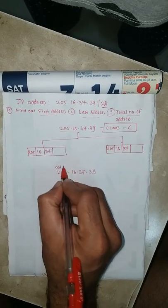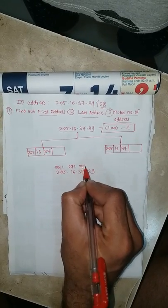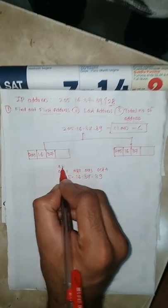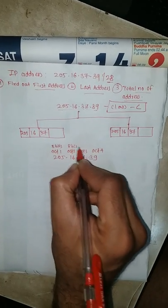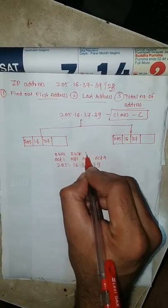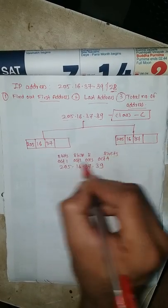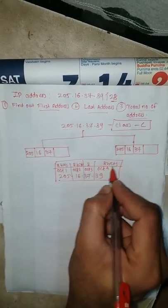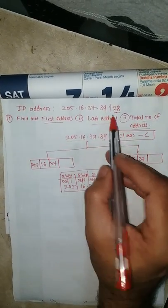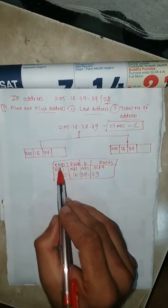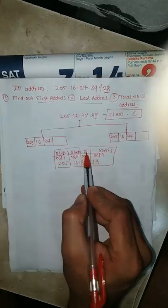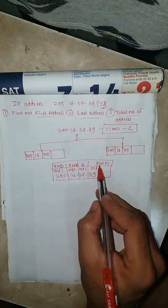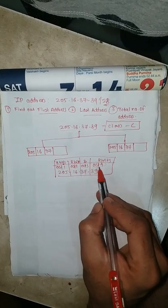This IP address is made up of 4 octets: oct 1, oct 2, oct 3, and oct 4. Each octet has 8 bits. The total number of subnet mask bits required is 28. 8 + 8 + 8 = 24 bits are covered by the first three octets, and the remaining 4 bits are in octet number 4.